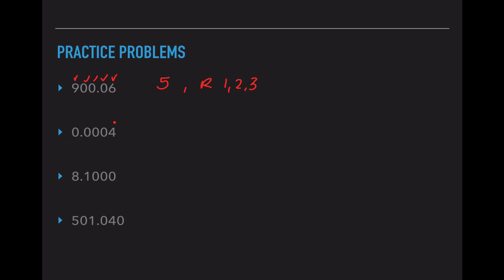For 0.0004: the 4 is significant by rule one. For rule two, the three zeros are to the right of the decimal but there is no non-zero to their left, so they are not significant. There is also no other non-zero number, so the sandwich rule does not apply. So we have one sig fig using rule one only. Technically rule four also applies since anything else is not significant.